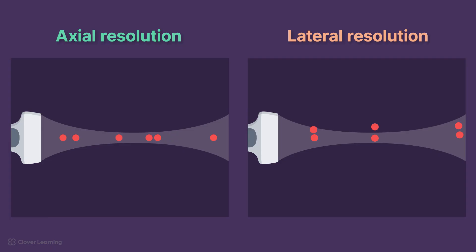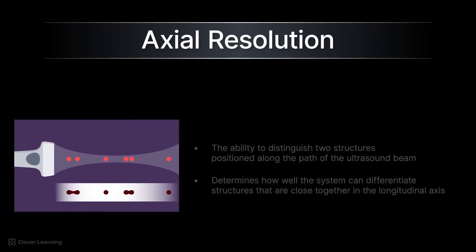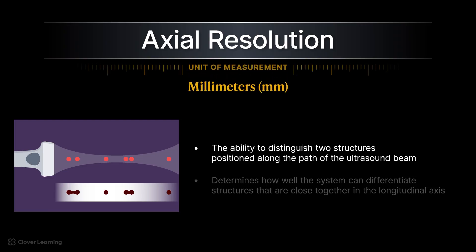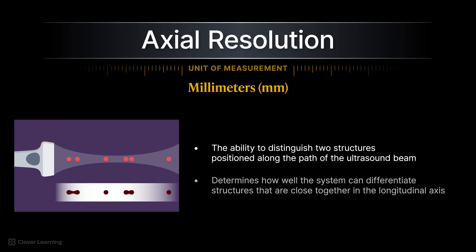Optimizing these resolution types collectively enhances diagnostic accuracy. Axial resolution is the ability to distinguish two structures positioned along the path of the ultrasound beam. This resolution is measured in millimeters and determines how well the system can differentiate structures that are close together in the longitudinal axis, meaning they are at different depths.